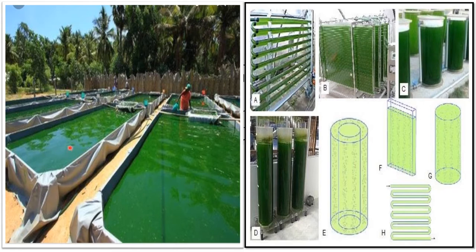Algae grow much faster than food crops and can produce a hundred times more oil per unit area when compared to conventional crops such as palm and soybean. Algae can be harvested within 1 to 10 days, therefore their cultivation permits several harvests in a very short time frame. Algal cultivation requires a huge amount of fertilizer chemicals in the form of nitrogen, phosphorus, carbon, minerals, and other growth-permitting nutrients for achieving good biomass and oil production.